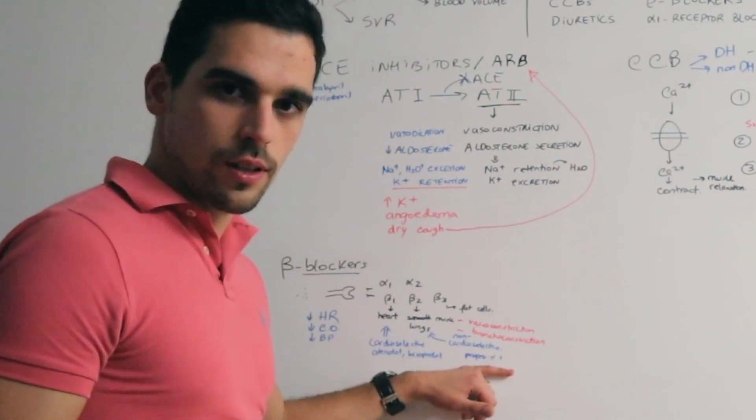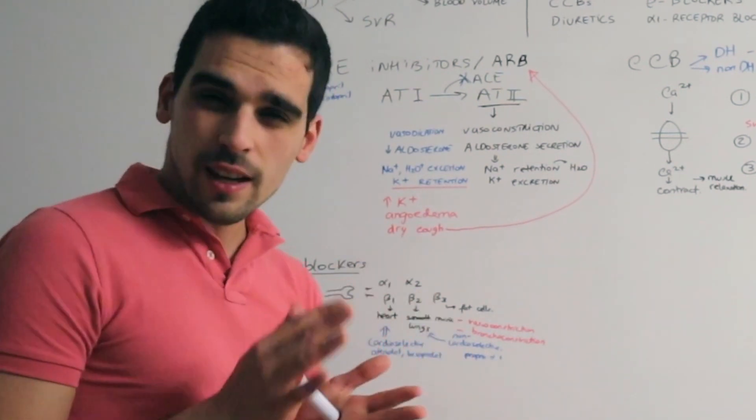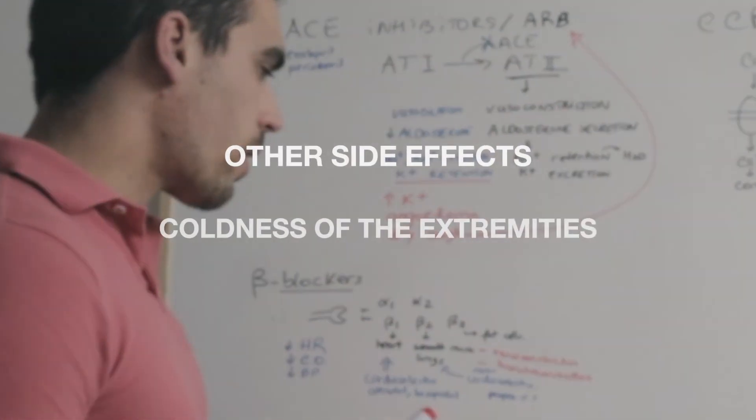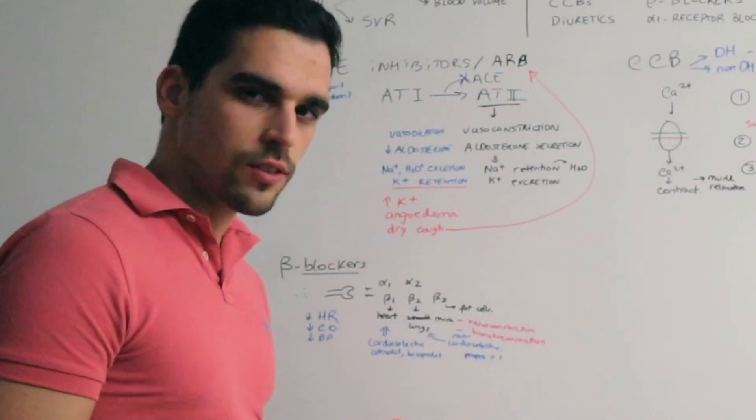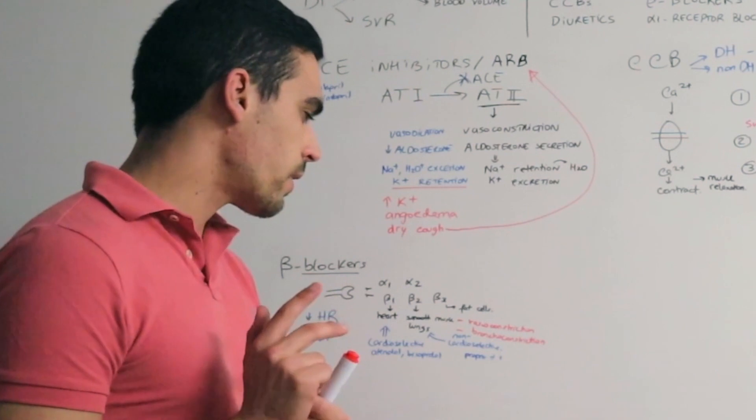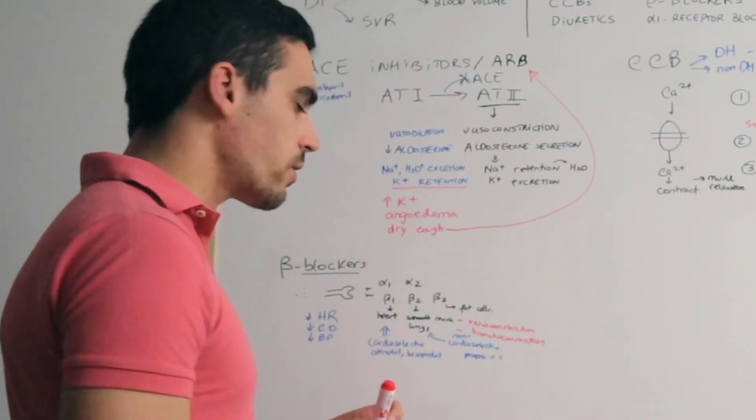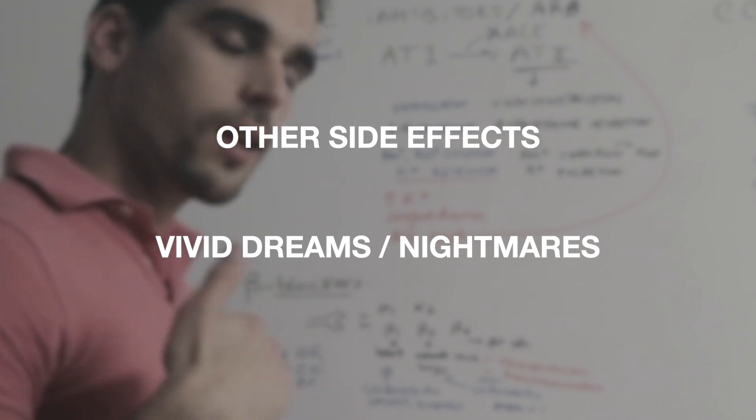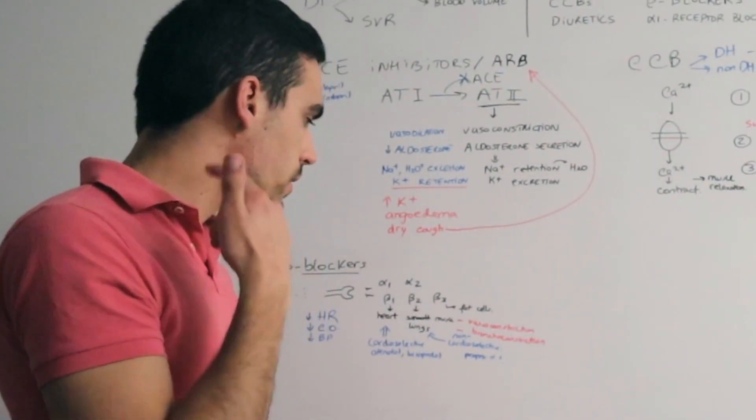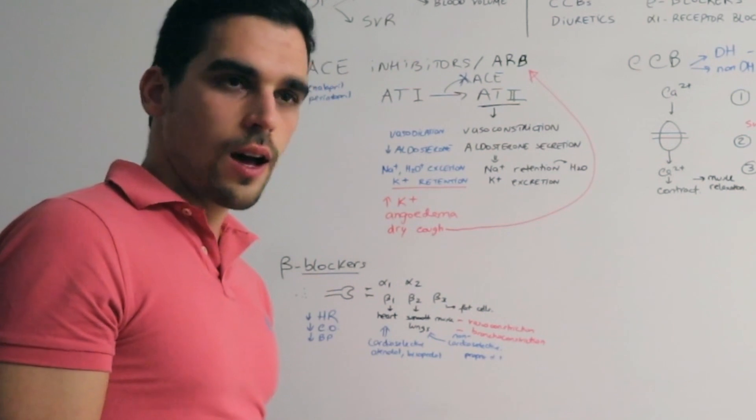Other side effects with beta blockers are coldness of the extremities because there is vasoconstriction. Some beta blockers are more likely to cause vivid dreams and nightmares because they can easily cross the nervous system.